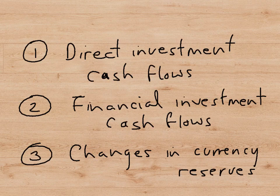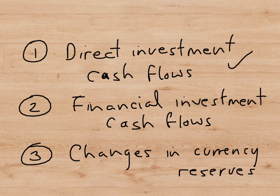Let's look in detail at the cash flows recorded in the financial account of the balance of payments. The first set are the so-called direct investment cash flows — these are cash flows associated with investment in real property, such as buildings, factories, and land. Next are the cash flows associated with financial investment, such as the purchase of shares, bonds, and other intangible assets — pieces of paper that represent claims on real assets.